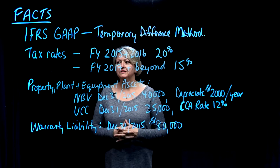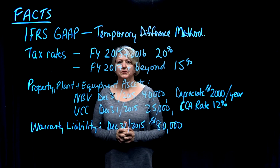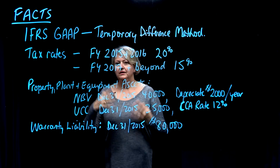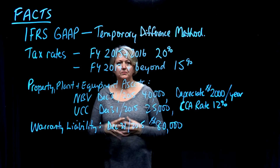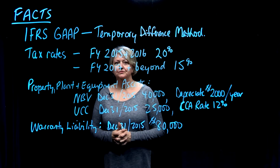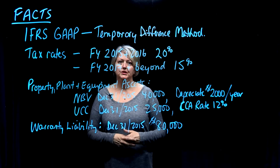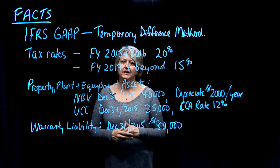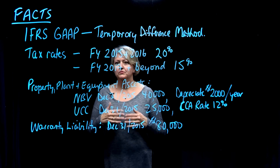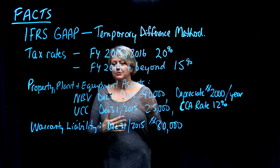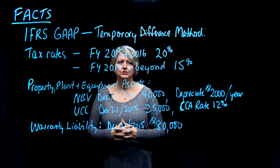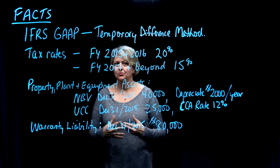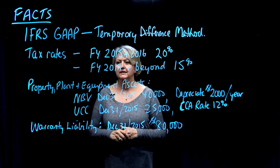The tax rates I've made up for this situation are: for the base year, 2015, as well as the current year 2016 — the year we're doing the tax accounting for — 20%. Then for every year from 2017 and beyond, we'll assume a tax rate of 15%, and that rate is known right now in the year 2016.